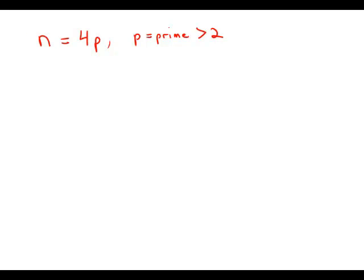If n equals 4p, where p is a prime number greater than 2, how many different positive, even divisors does n have, including n?